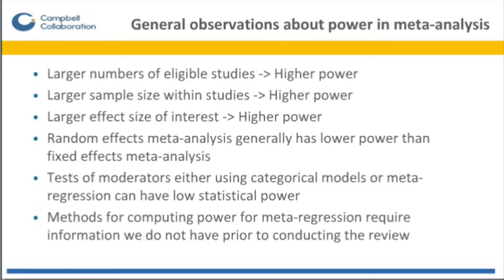Larger sample sizes within studies — that is, larger primary studies included in the meta-analysis — will also give us higher power. The larger the mean effect of interest that we think is of clinical significance, the higher the power as well. In general, random effects meta-analysis has lower power than fixed effects meta-analysis. Tests of moderators using either categorical models or meta-regression are likely to have low statistical power without a large number of studies, and methods for computing power for meta-regression require information we normally do not have prior to conducting the review.